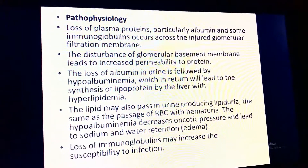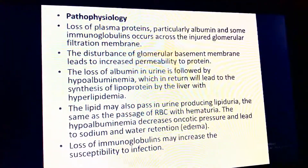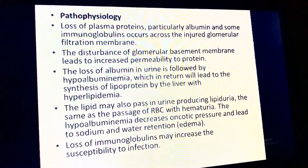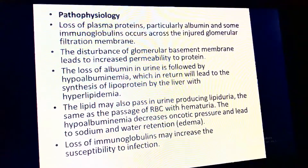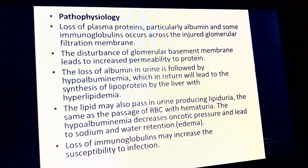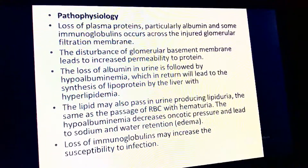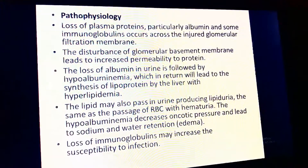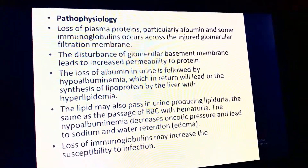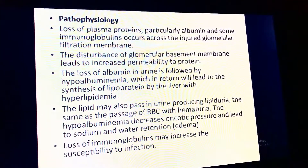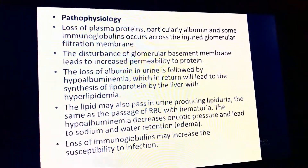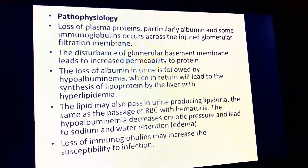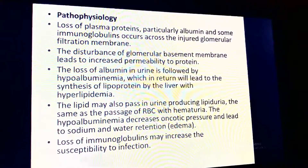Pathophysiology: loss of plasma proteins, particularly albumin and immunoglobulins, occurs across the injured glomerular filtration membrane. Disturbance of the glomerular basement membrane leads to increased permeability to protein. Loss of albumin causes hypoalbuminemia, which leads to synthesis of lipoprotein by the liver and hyperlipidemia. Lipids may also pass into the urine causing lipiduria. Hypoalbuminemia decreases oncotic pressure, leading to sodium and water retention. Loss of immunoglobulins increases susceptibility to infection.